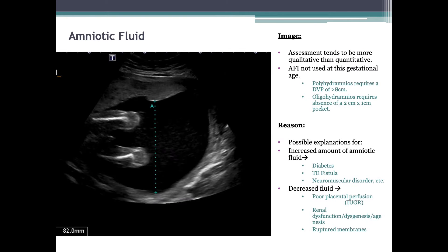Finally, the amniotic fluid: at this stage of pregnancy the assessment tends to be more qualitative and only quantified when there is a suspicion of abnormality. The amniotic fluid index is not used at this gestational age. Polyhydramnios requires a deepest vertical pocket of greater than eight centimeters; oligohydramnios requires the absence of a two-by-one centimeter pocket. Consider explanations for increased fluid: diabetes, TE fistula, neuromuscular disorder limiting swallowing. Consider explanations for decreased fluid: poor placental perfusion as in IUGR, fetal renal dysfunction or agenesis, or ruptured membranes.